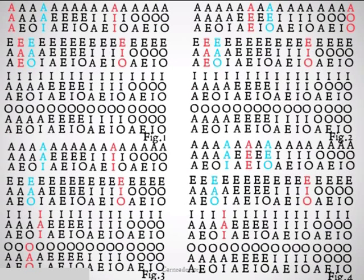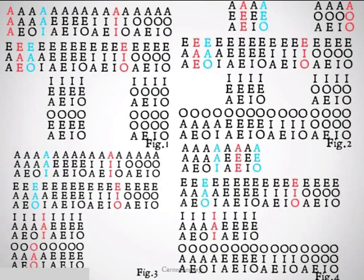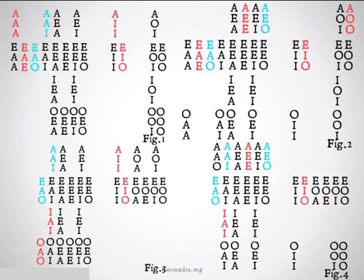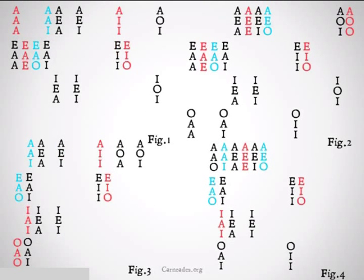We can also look at this in terms of all of the possible arguments. When we add rule one, we get to here. With rule two, we get to here. With rule three, we get to here. We are almost down to only the unconditionally and conditionally valid arguments. With rule four, we will get down to those, and rule five will split us between the conditionally valid and the unconditionally valid.